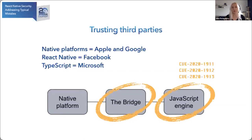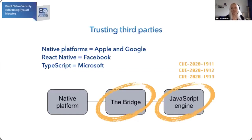The same problem goes with JavaScript engines. If you choose a custom JavaScript engine, you'll need to deal with it as well. For example, Facebook has a custom JavaScript engine for iOS and Android called Hermes, to make React Native applications more efficient. But there are already found vulnerabilities in the Hermes JavaScript engine. Of course, they're already fixed. But Hermes for iOS was just released this year, and there are still potential concerns.